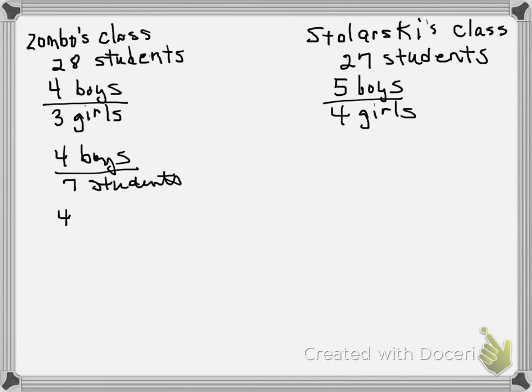So there were a total of 28 students. If I multiply 4 7ths times 28, we cancel the 7. 4 times 4 is 16.